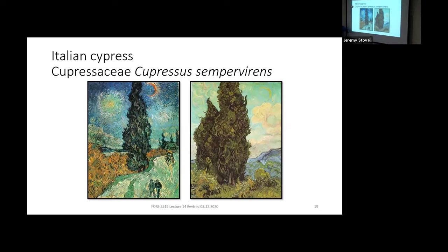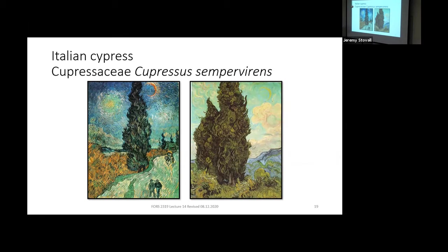Italian Cypress is probably most famous because Van Gogh painted many of them. You can see that narrow columnar form clearly even with that style of artwork.